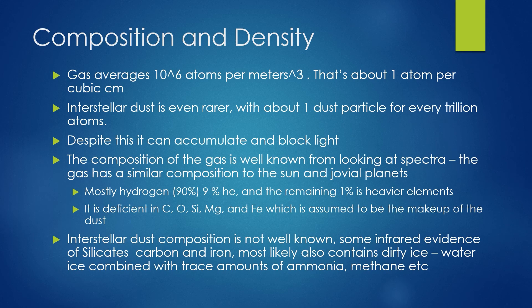While no part of our galaxy is truly devoid of matter, the density of the interstellar medium is actually extremely low. Gas averages about 10 to the 6th power atoms per meter cubed — about one atom per cubic centimeter — making an insane vacuum. Interstellar dust is even rarer, with about one dust particle per every trillion atoms. Despite this, it can accumulate and will block light, forming interstellar cloud groups. It's distributed very unevenly, with some areas having little to none, others having a moderate amount which partially blocks light, and still other areas with so much we cannot see through without looking into the infrared or radio spectra.